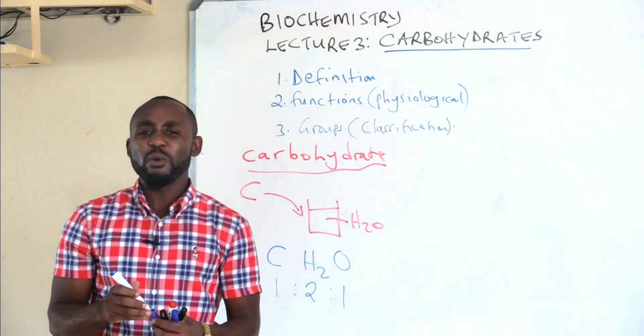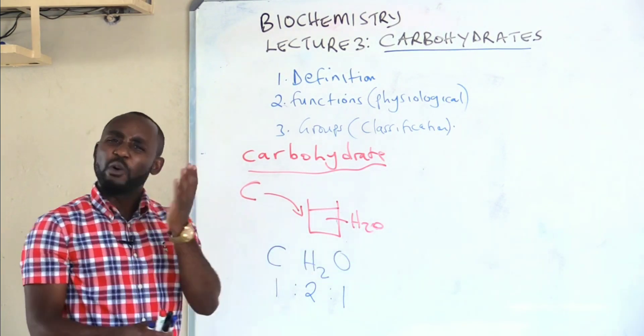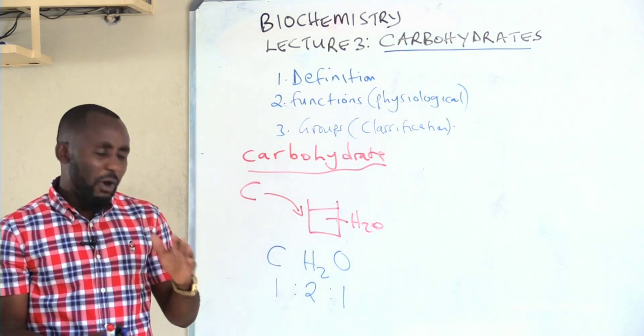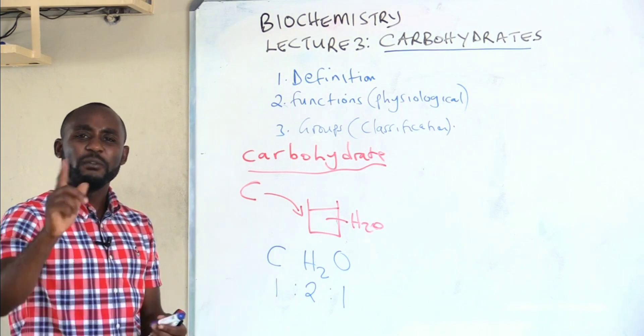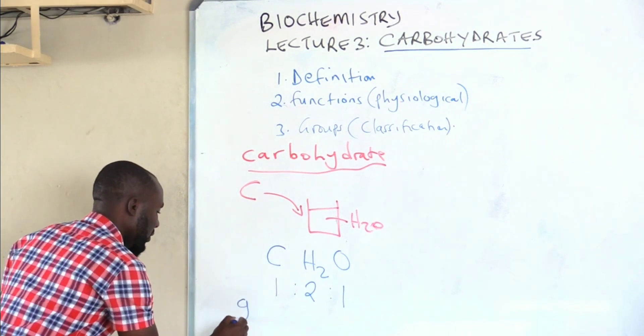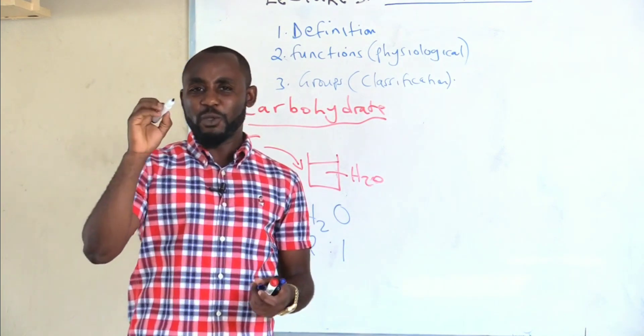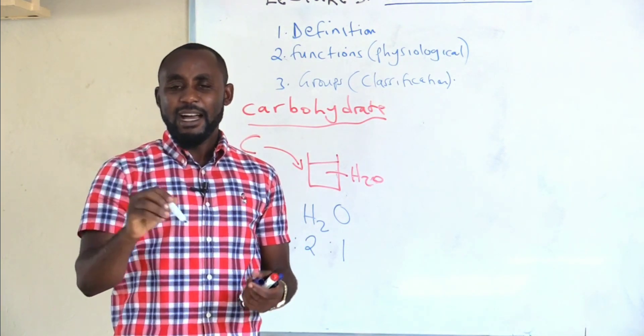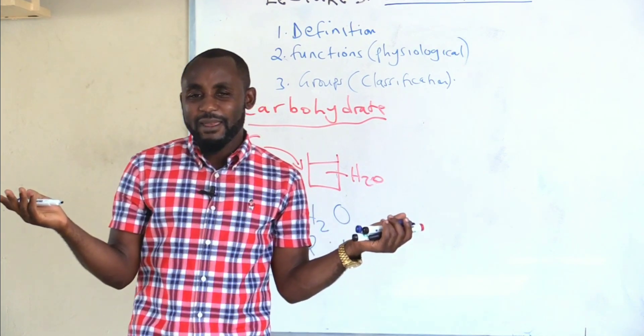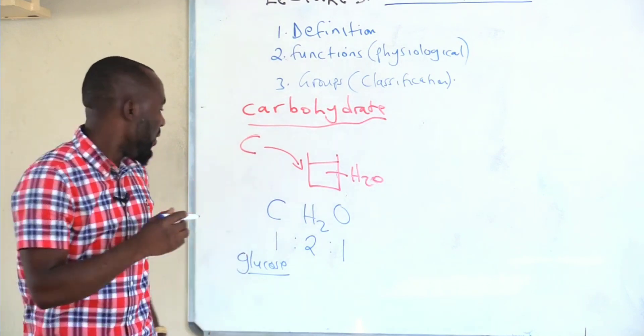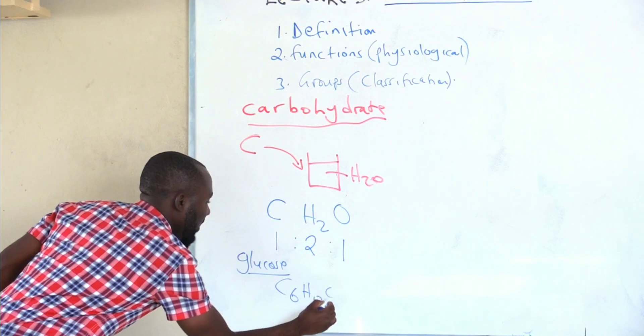This means that when you get a carbohydrate, you expect the ratio of carbon to oxygen to be almost equal, while that of hydrogen is normally by two. Let me give an example that you are very familiar with: glucose. Do you remember the glucose that you used in photosynthesis and the glucose that you used in respiration? That was in secondary school. What is the formula of that glucose? We used to write it C6H12O6.